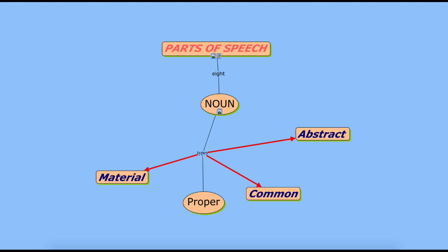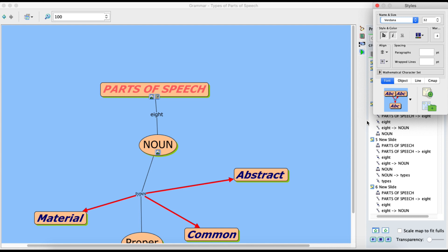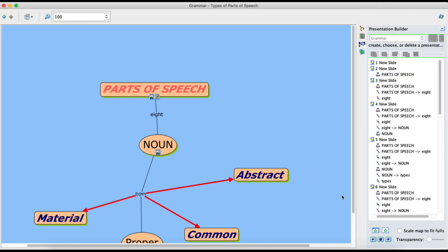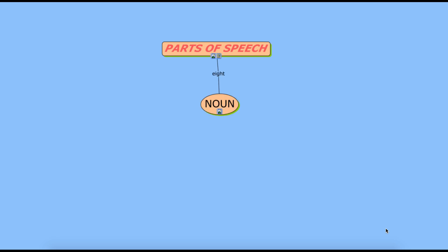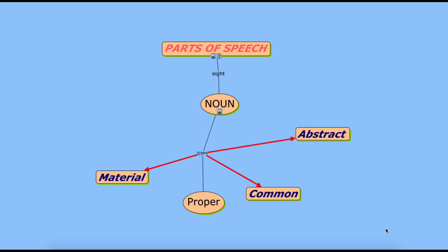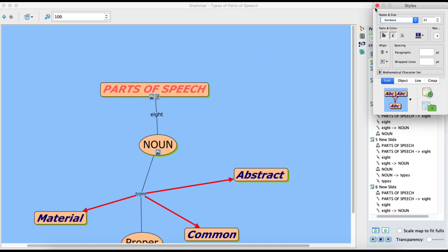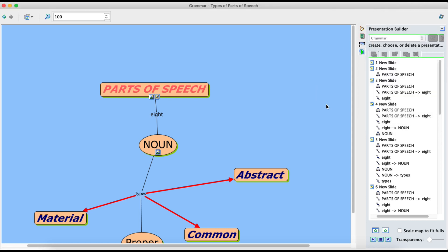Sorry, let me go back first. From the first slide let's see the presentation. This is the blank slide — this is my presentation mode. First I get the topic, then number of parts of speech, noun, types, material, proper, common, abstract. So this is how my presentation will be visible to my students if I am showing it in my class.